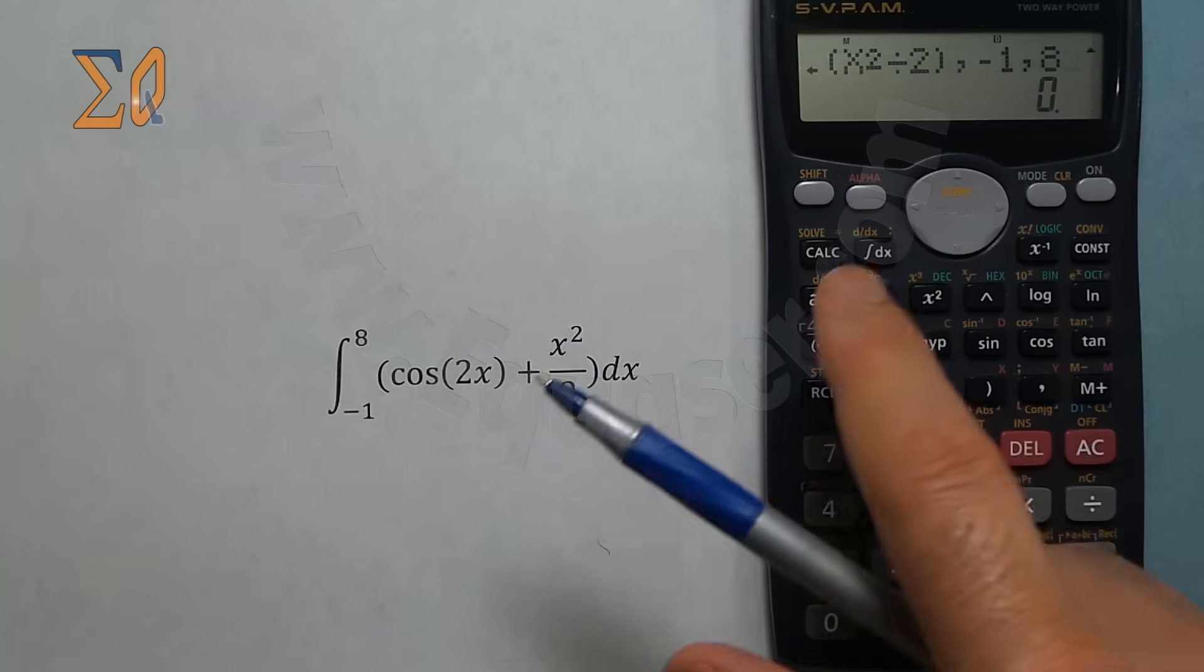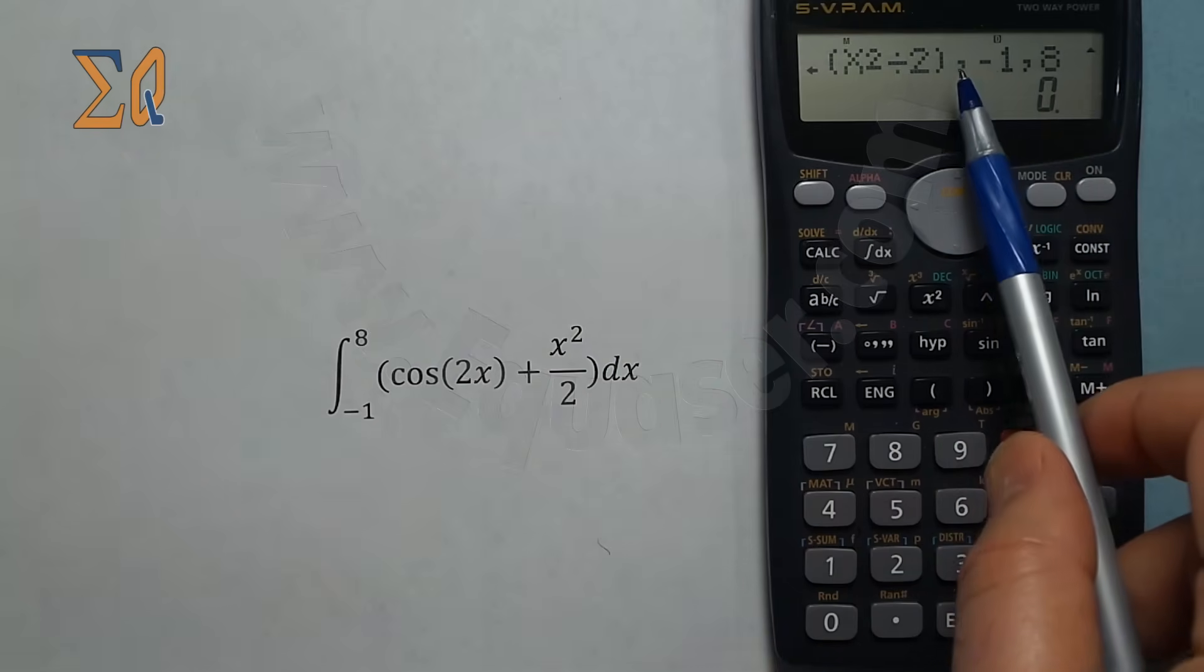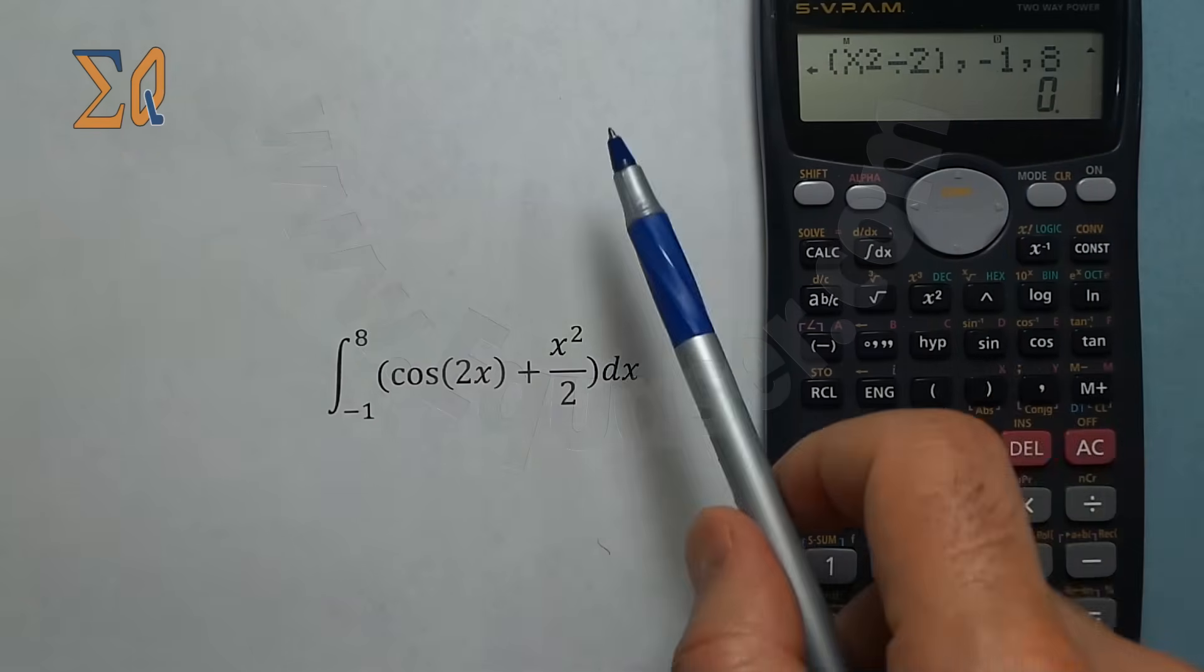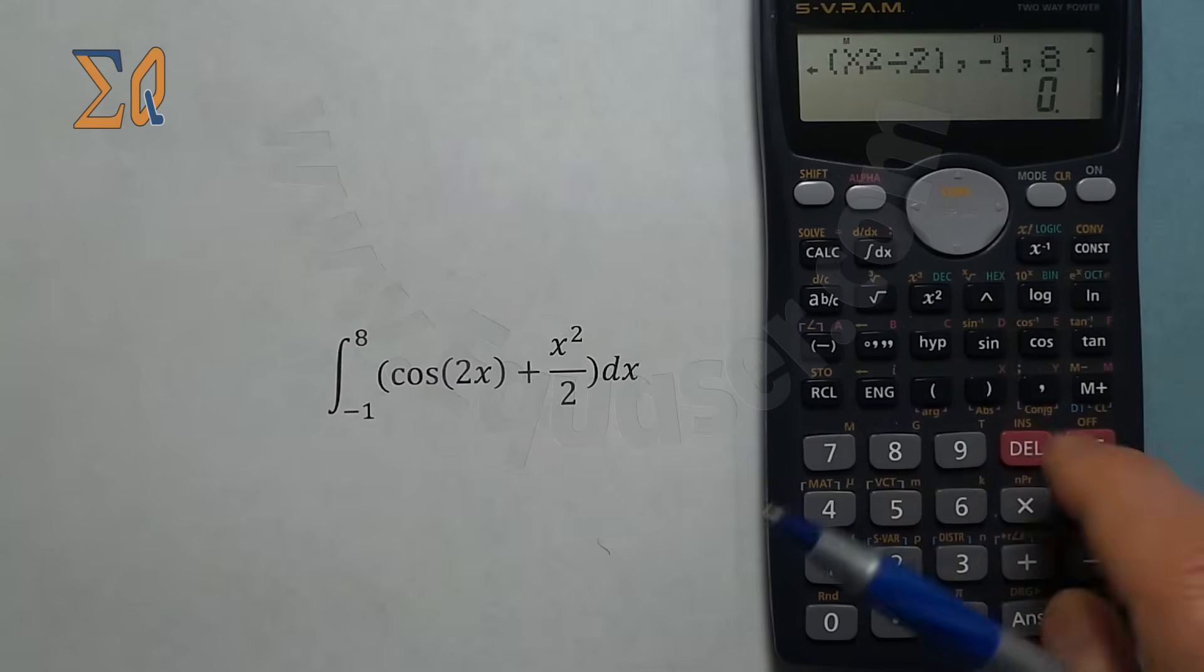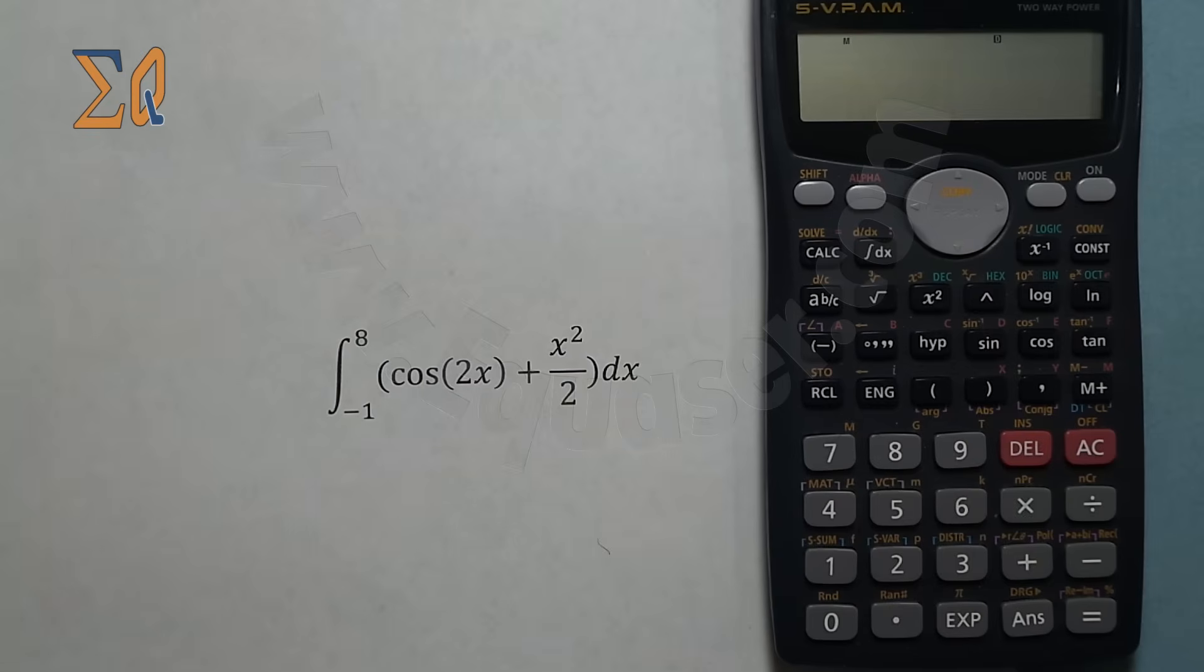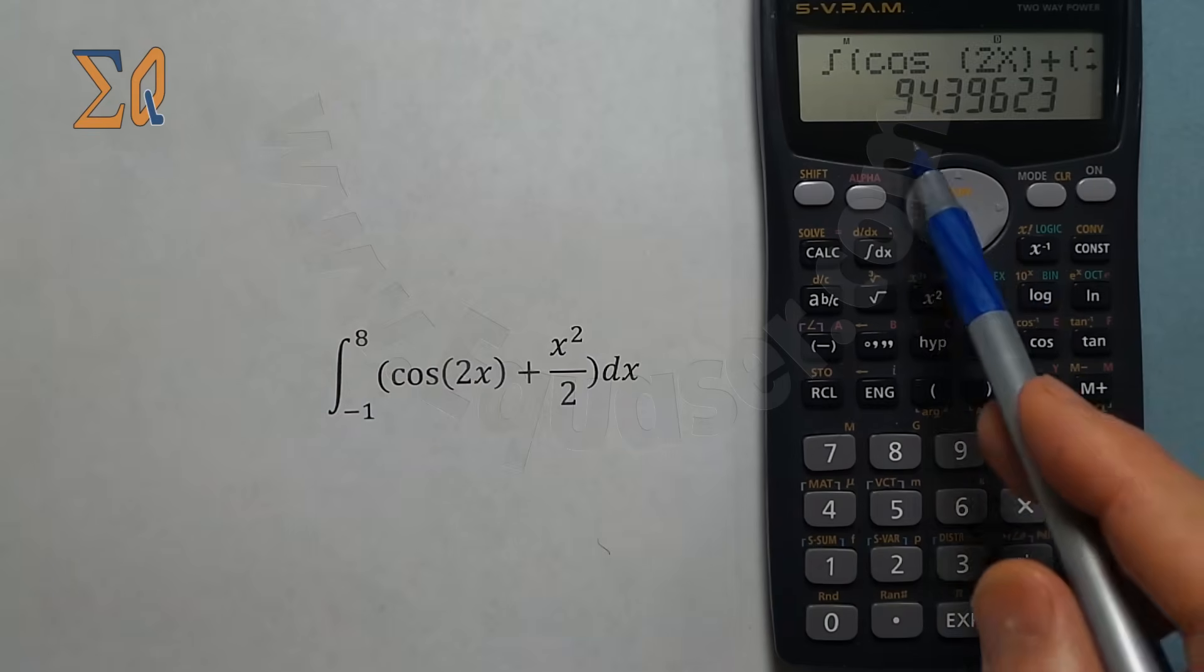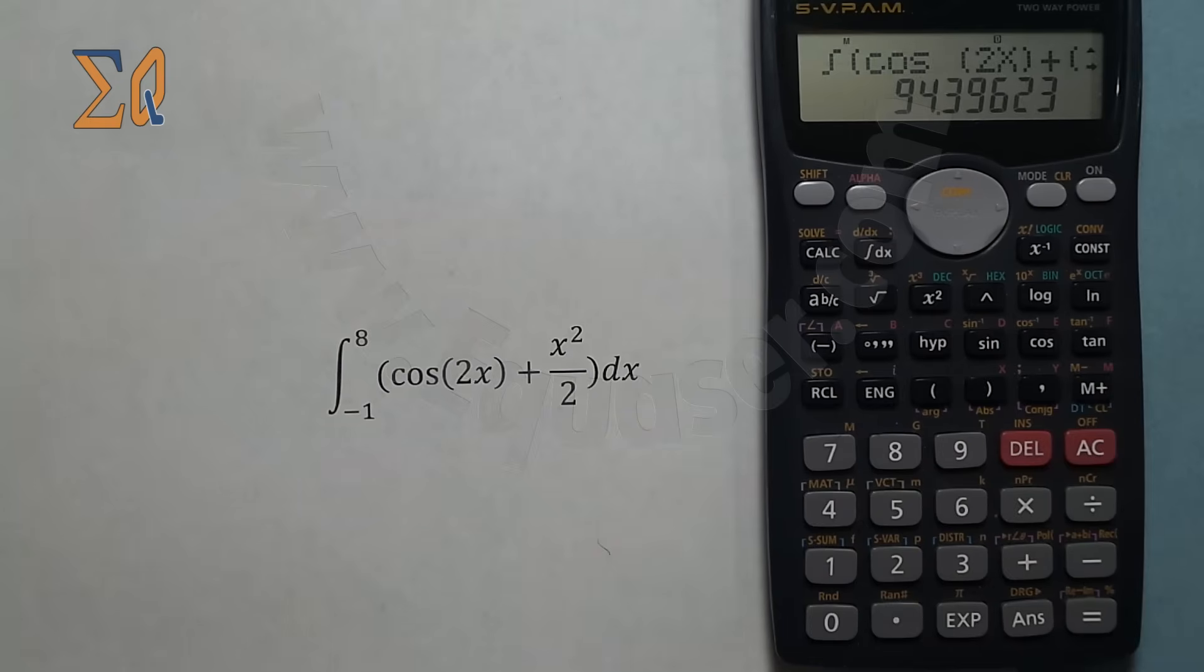Finally close it. This comma separates the main function from the lower bound, comma, upper bound. Close and press equal sign. It takes a while, but as you can see it's been evaluated - it's 94.39. Thank you for your attention.